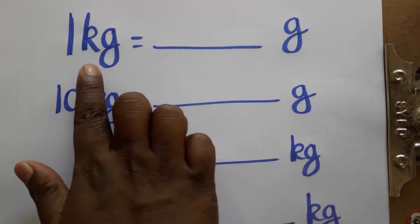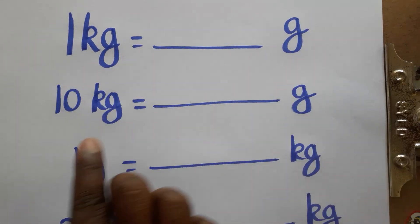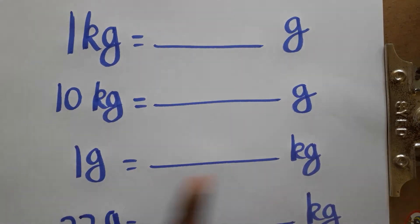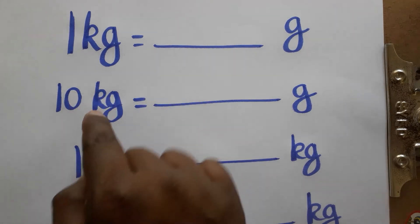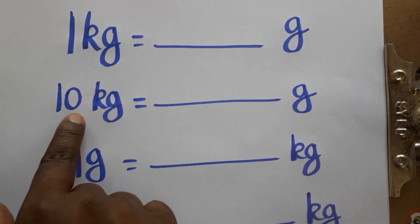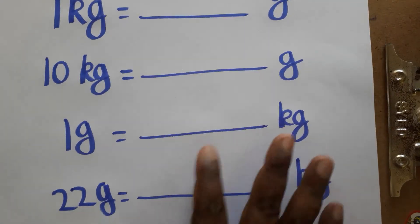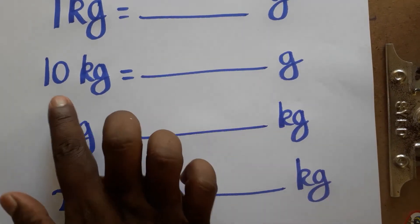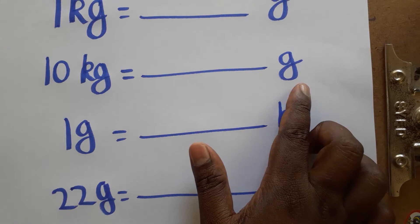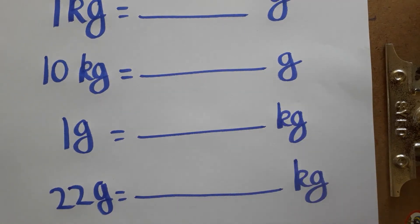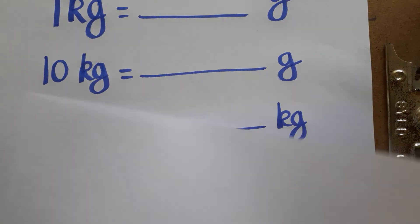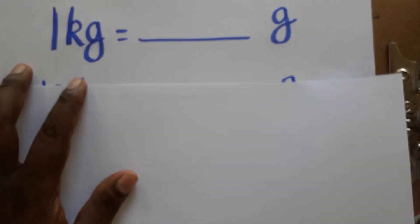Today we are going to learn how to convert kg to gram and gram to kilogram. I have given two examples: one is 10 kg and another is 22 gram. Kg to gram and gram to kilogram — that is the conversion we are going to learn. If you like my channel, please subscribe.